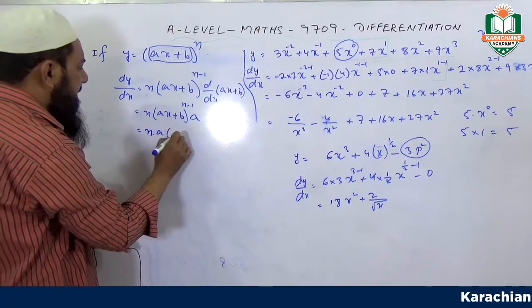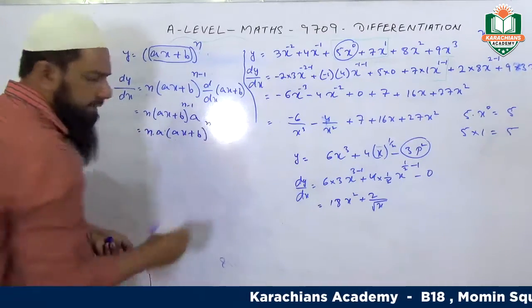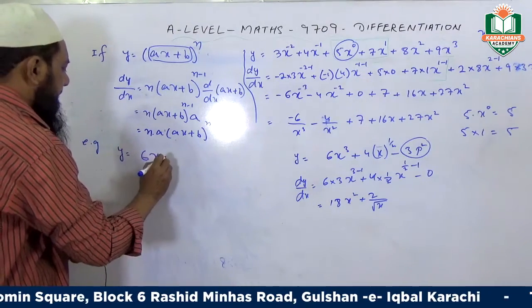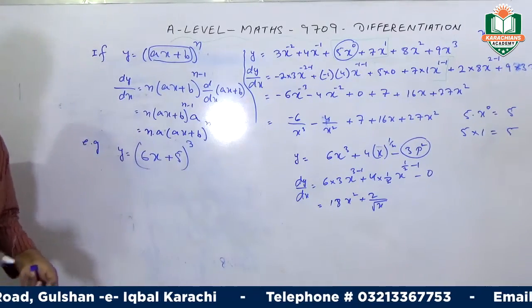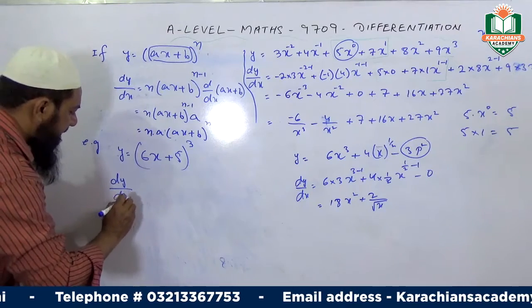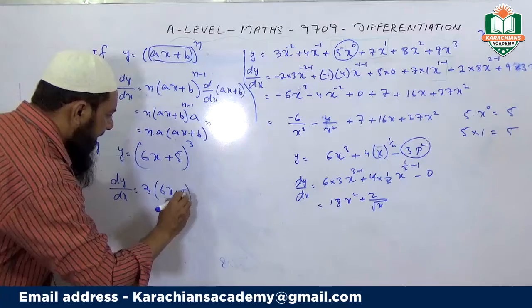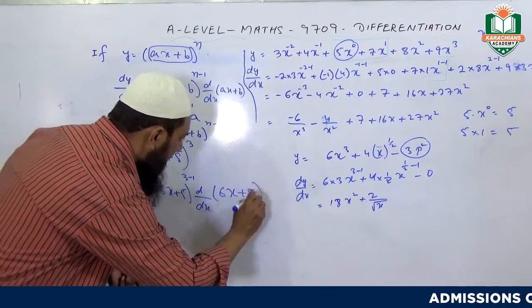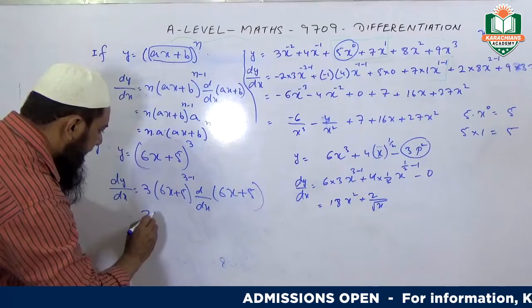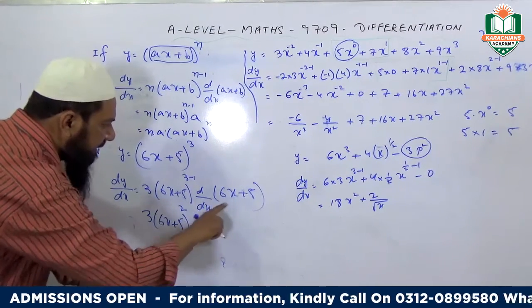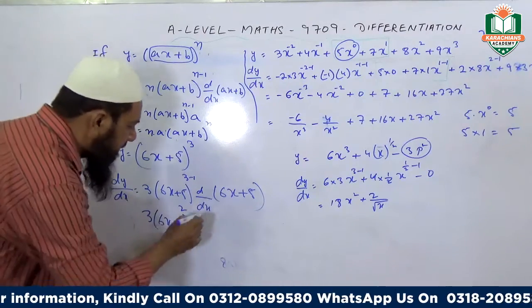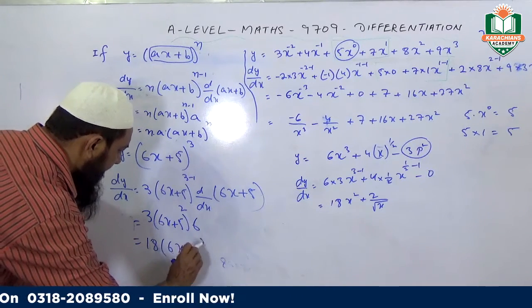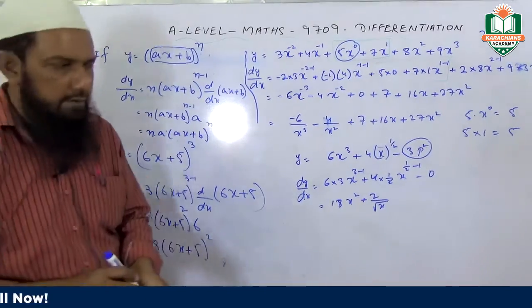For example, y equals (6x + 5)^3. Differentiate this value. dy/dx equals 3 times (6x + 5)^(3-1) times d/dx of (6x + 5). Since d/dx of 5 is 0 and the coefficient is 6, this equals 3 times (6x + 5)^2 times 6.